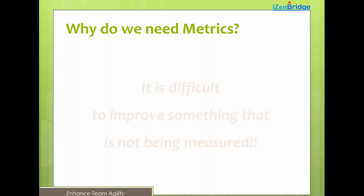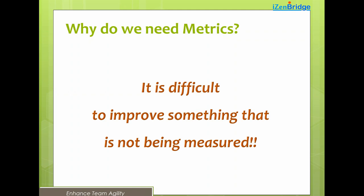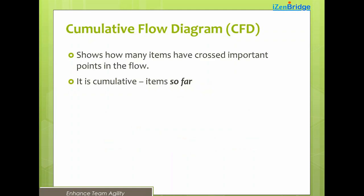That's where we need metrics. I strongly believe it's difficult to improve something that is not being measured. If you're not measuring how effective your flow is, it's difficult to improve it — inertia and complacency set in. We'll talk about four different Kanban metrics: cumulative flow diagram, control chart, lead time distribution, and throughput chart.